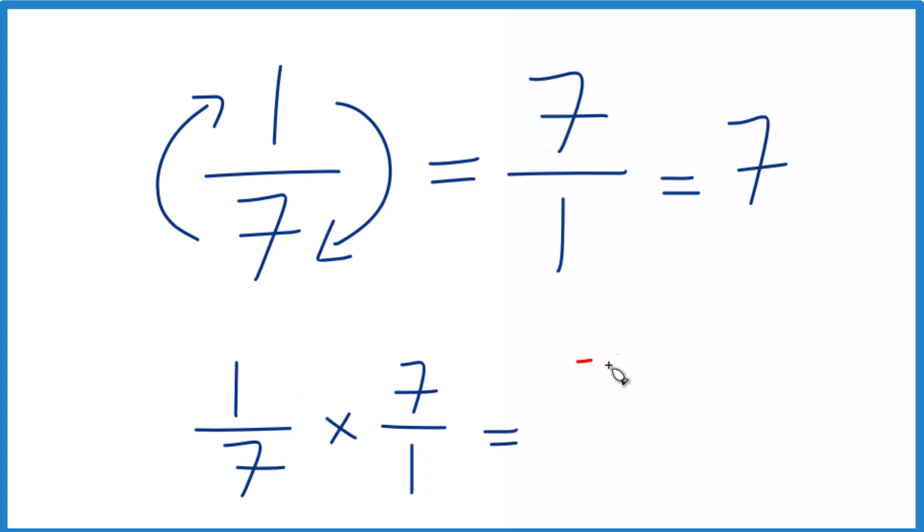So 1 times 7 is 7. 7 times 1, that's 7. And 7 divided by 7, that gives us 1.